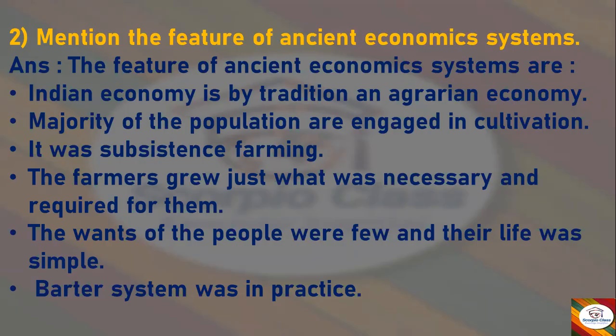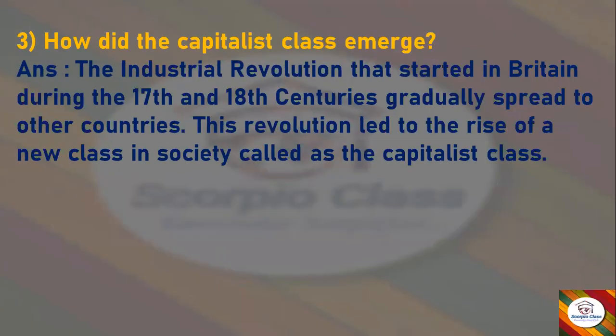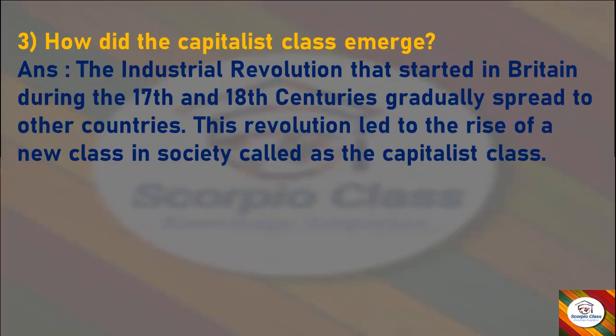Next question: how did the capitalist class emerge? Answer: the industrial revolution that started in Britain during the 17th and 18th centuries gradually spread to other countries. This revolution led to the rise of a new class in society called the capitalist class.